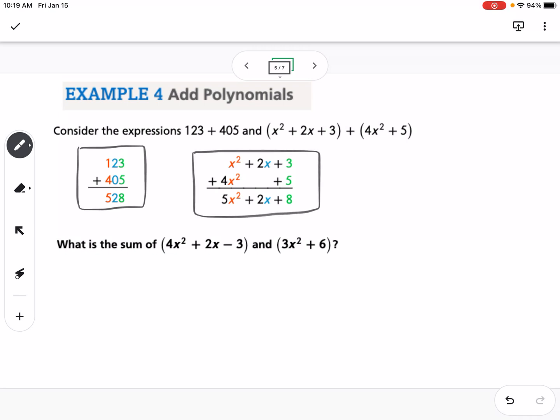We're going to add the constants, we're going to add the x's, add the x squareds. If we need to, add the x cubes, and so on. So I'm going to set this up kind of like the example up above. So I'm going to write 4x squared plus 2x minus 3 plus,